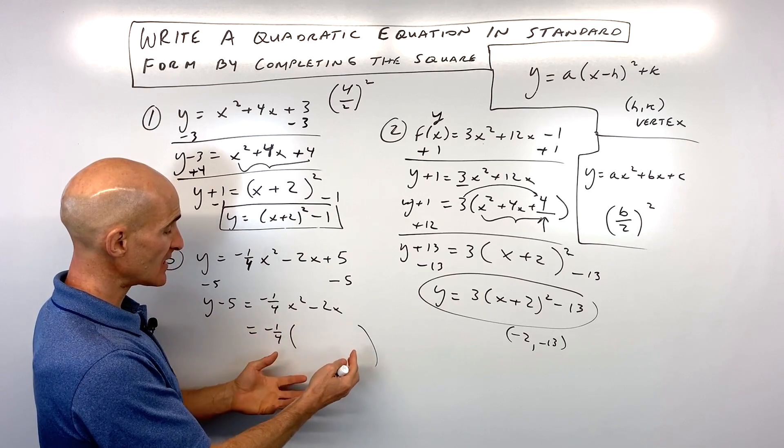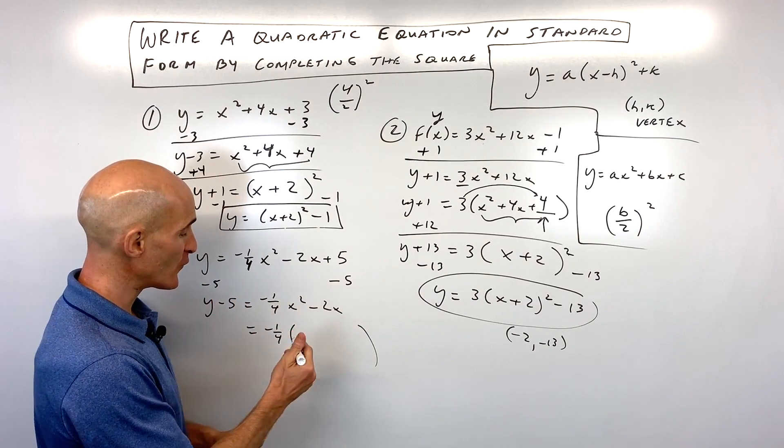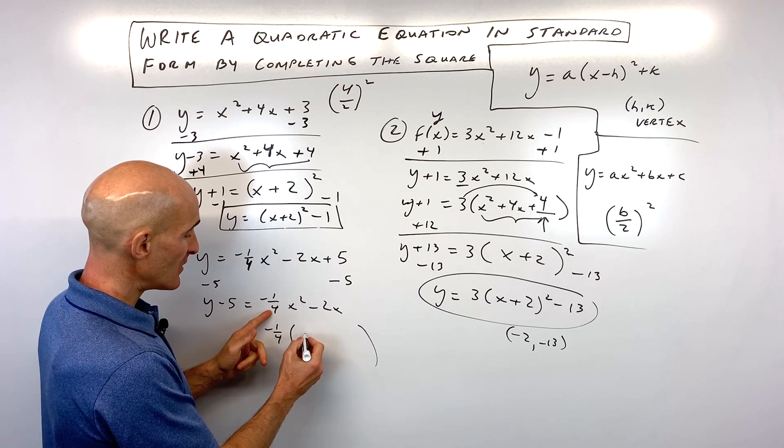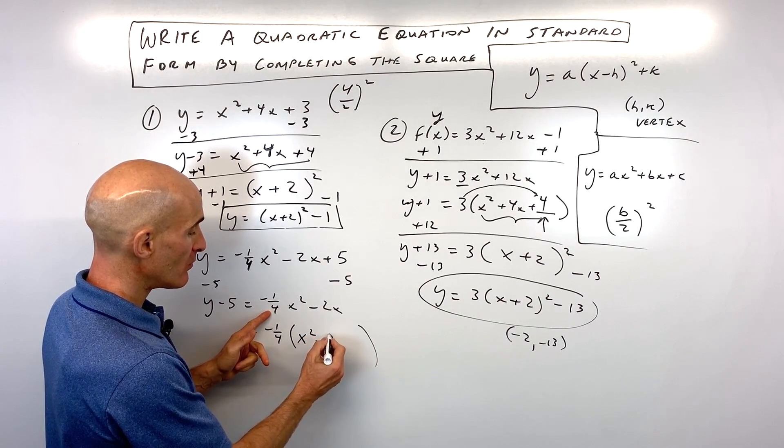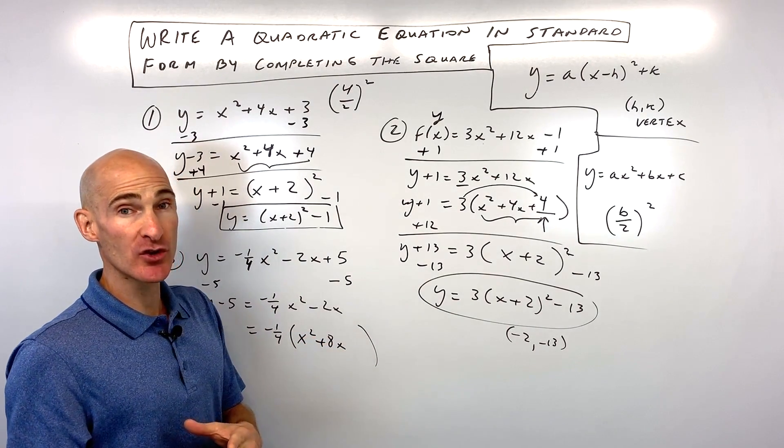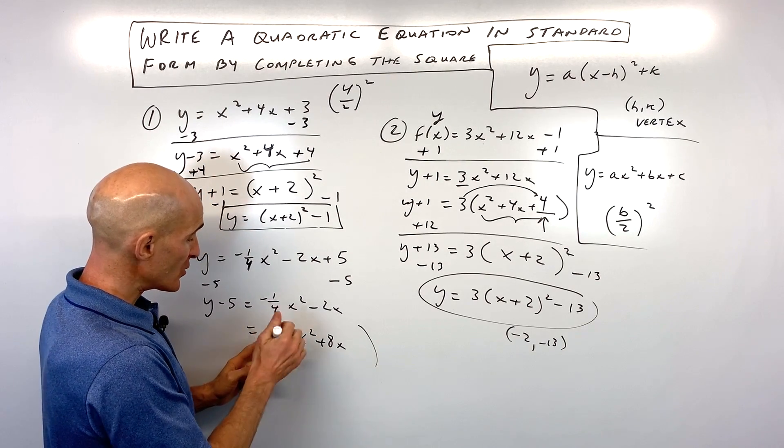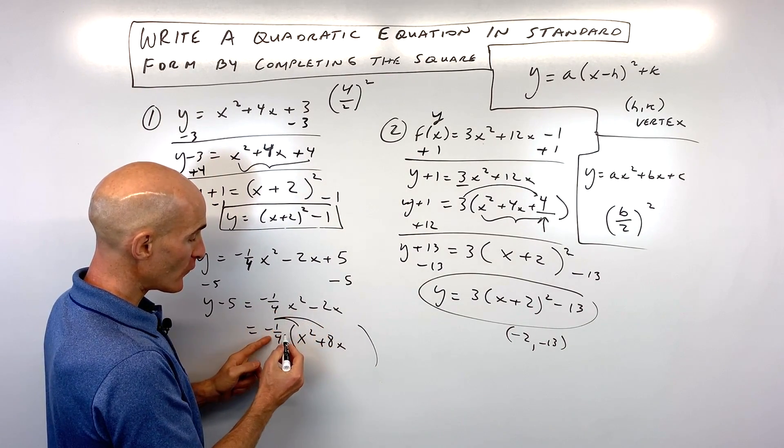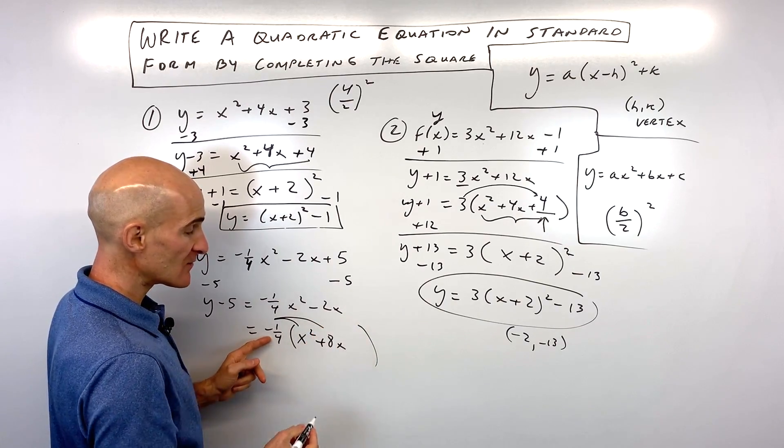Okay, so here because I divided out negative 1/4, I'm going to multiply by negative 4. And so that's going to give me x squared plus 8x. Now if you want to check your work, go ahead and distribute the negative 1/4 in. You see that gives us back negative 1/4 x squared. It also gives us back negative 2x.